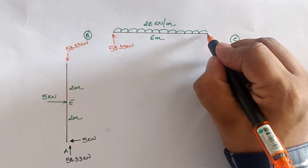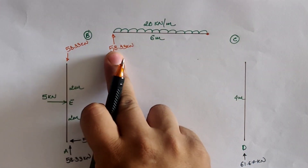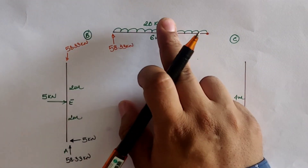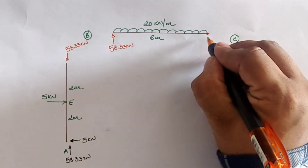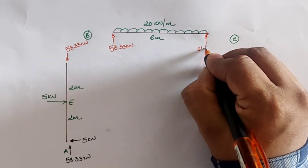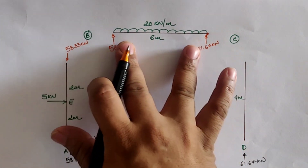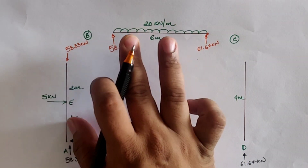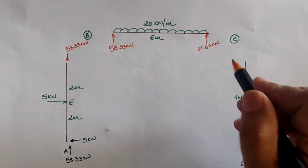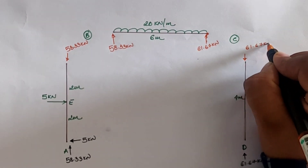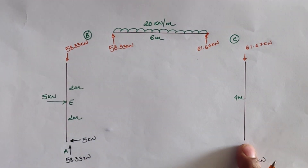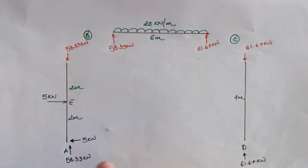For the BC member, at location B we have 58.33 kilo Newton upward and a total UDL of 120 kilo Newton downward, so we need to apply 61.67 kilo Newton vertically upward to achieve equilibrium. At location C there is no load in the actual frame, so we apply the opposite force of 61.67 kilo Newton. This confirms the total vertical load is zero and the frame is balanced.